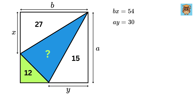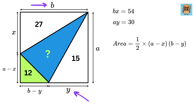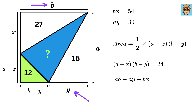Now consider the third triangle. This entire length is a and this portion is x, so the remaining side is a minus x. This entire length is b and this portion is y, so this side is b minus y. Thus its area is half of (a minus x) times (b minus y), and since its area is 12, we get (a minus x)(b minus y) equals 24. Expanding gives: ab minus ay minus bx plus xy equals 24.